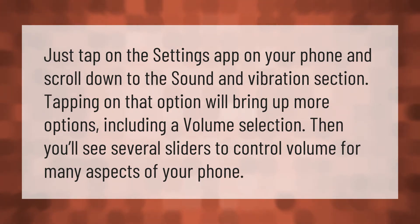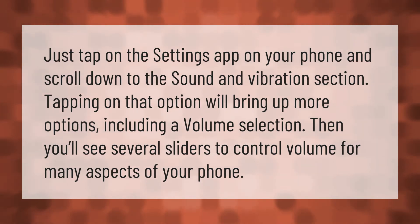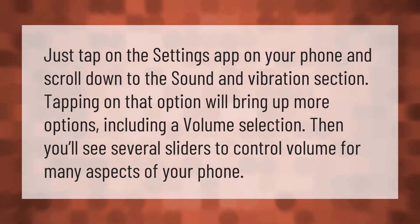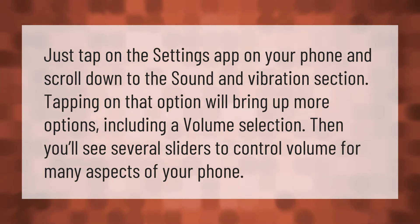Tap on the Settings app on your phone and scroll down to the Sound and Vibration section. Tapping on that option will bring up more options including a volume selection, and you'll see several sliders to control volume for many aspects of your phone.